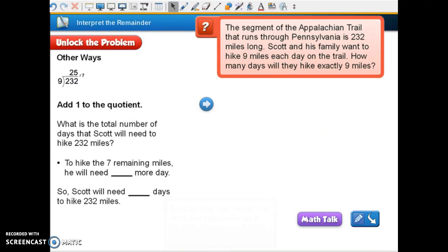Okay, this is on that same page, 88, in the blue box, other ways. And we did our math on our last one, and we got 25, remainder 7. Now, sometimes we have to add 1 to our quotient. What is the total number of days that Scott will need to hike 232 miles, which is what we divided earlier, right? And we got 25, remainder 7. So we know it's going to take 25 days, but then we're going to have that 7 miles left over. So what are we going to have to do? Think in your mind. What are we going to have to do? We're going to have to add one more day to his hike so he gets the whole trail. So Scott will need 26 days to hike the 232 miles. It will take him 25 days at 9 miles a day, and he'll have 7 miles left over, and so he will have to hike that on the next day.